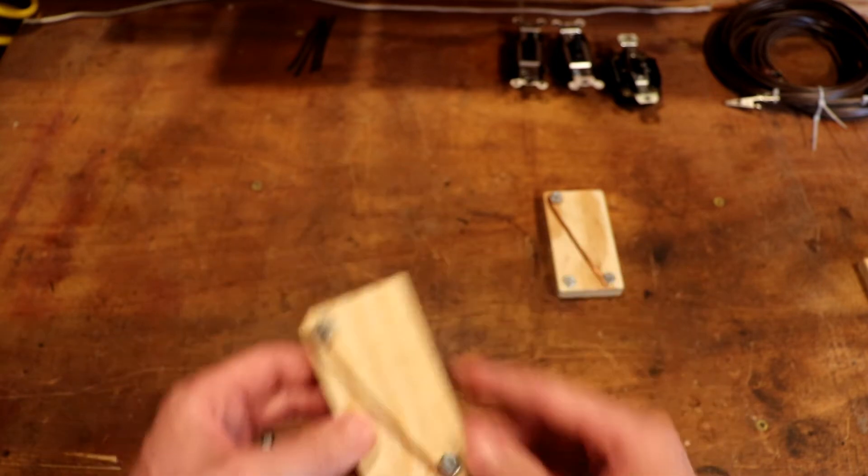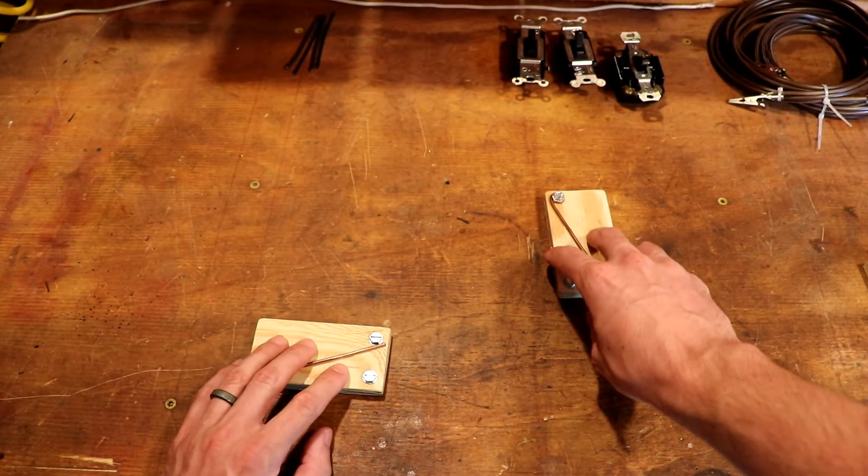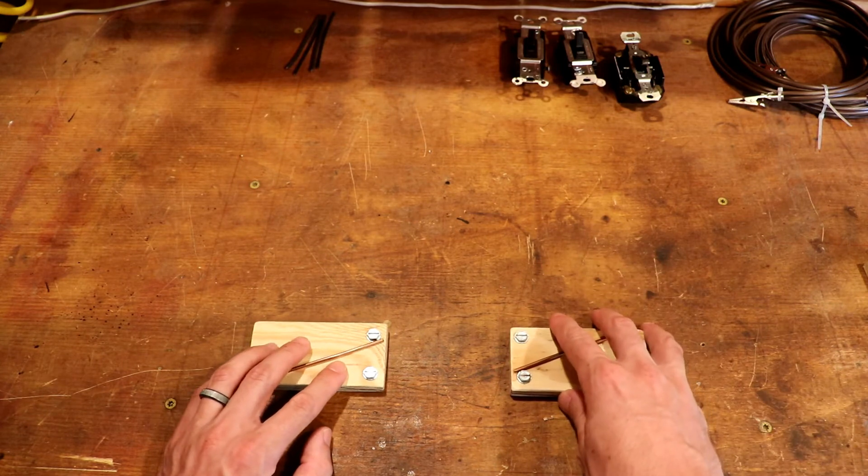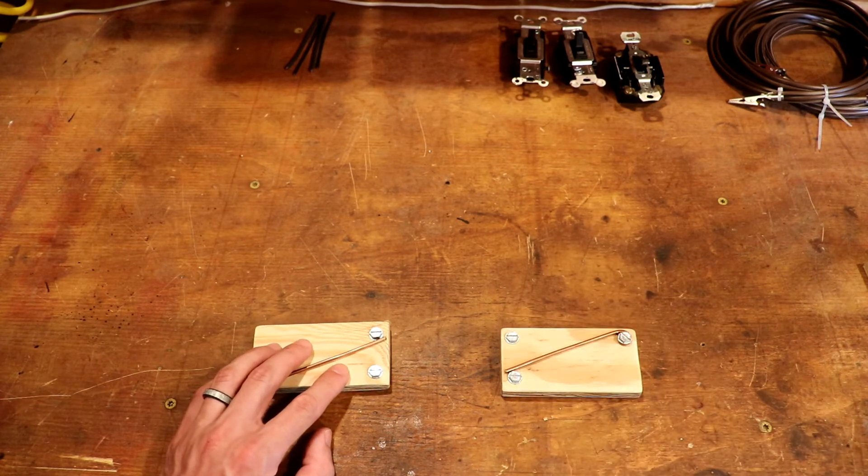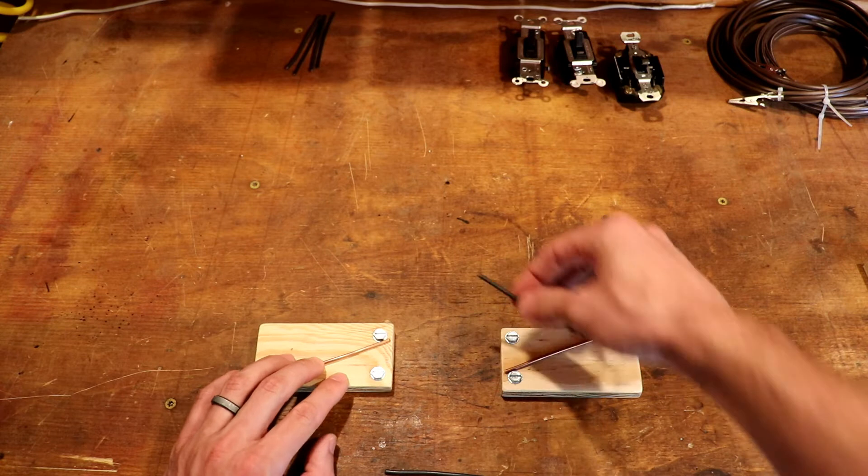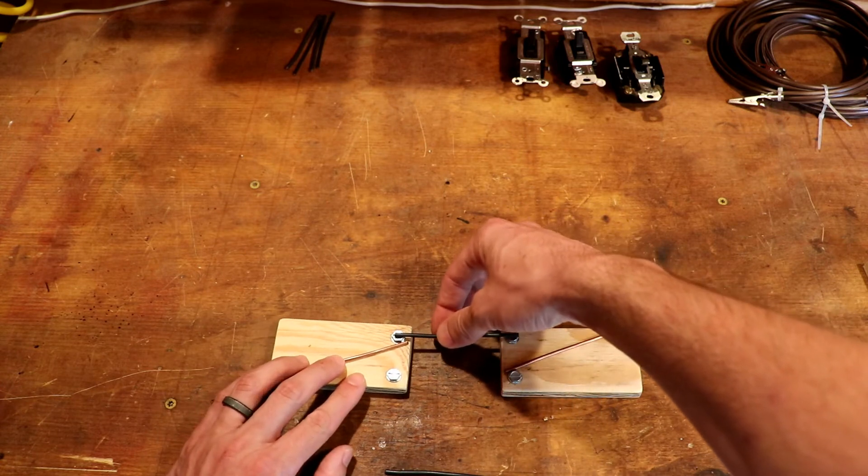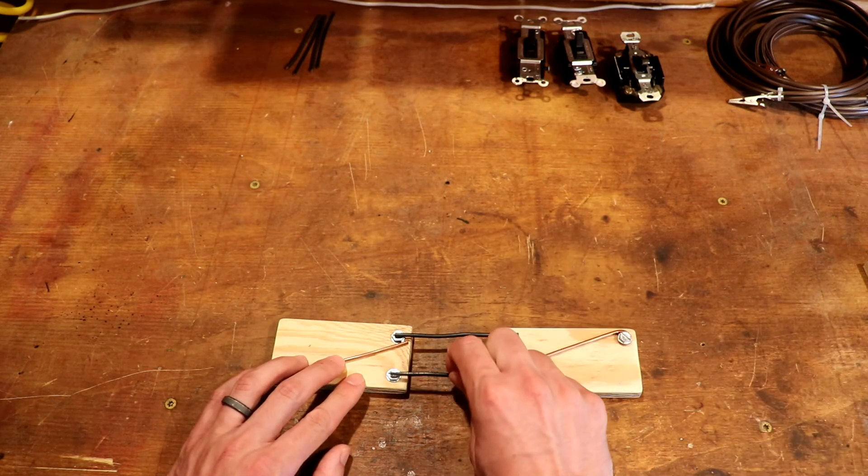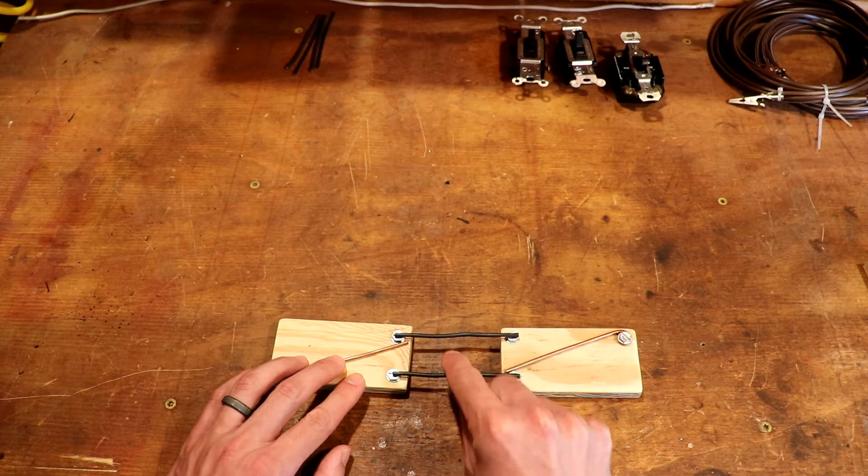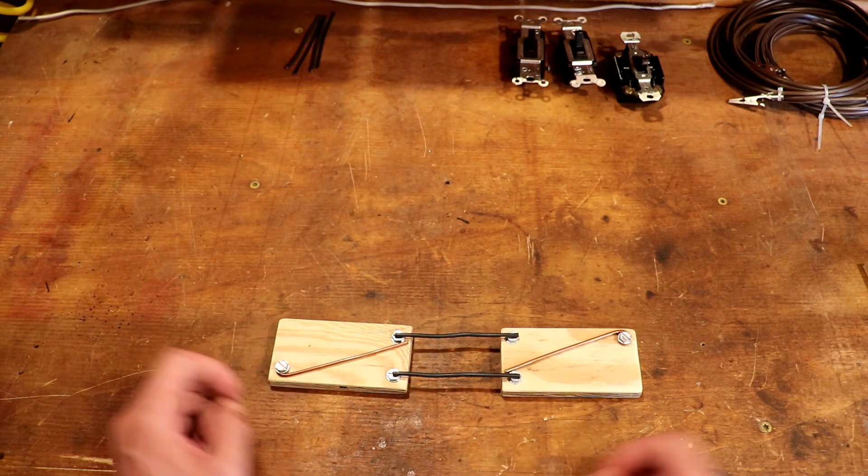So say we want to power a light with this. A common instance that you'd use this in is a long hallway where you want to put a switch at either end of the hallway, both controlling the same light. We would have these two switches likely 20 feet apart or so, the length of a hallway, connected by a pair of wires.